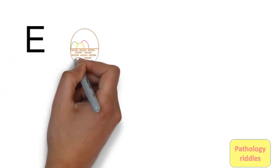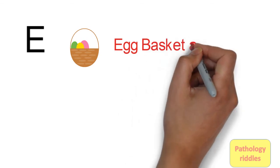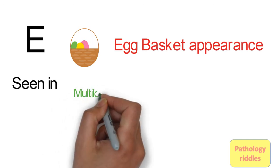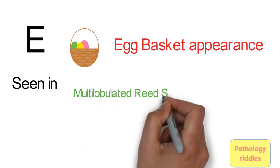Then we go to E. E is egg in basket appearance. This is seen in Hodgkin's lymphoma, the appearance of multilobulated Reed-Sternberg cells.